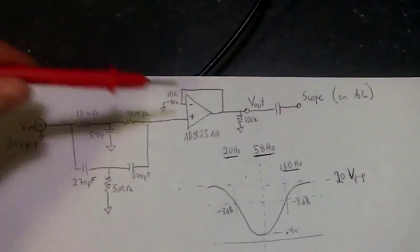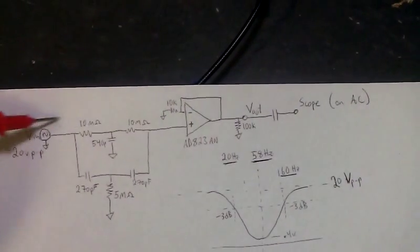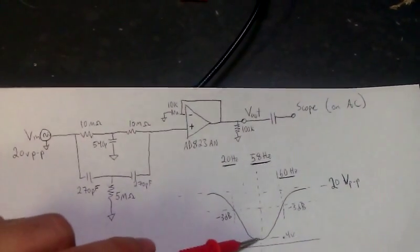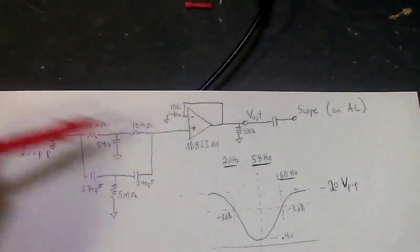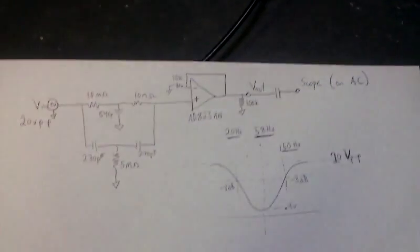And then we're just measuring the output here. So at 60 Hz you're not going to have much output. It's actually 0.4 volts peak to peak for a 20 volt peak to peak input. So it's really filtering out that 60 Hz.